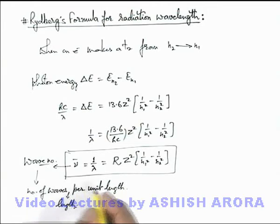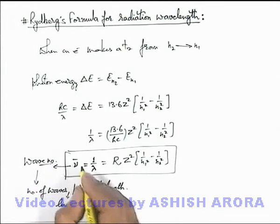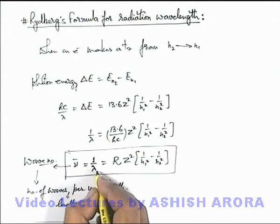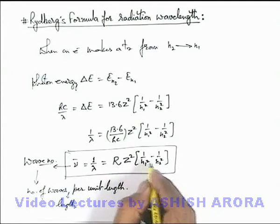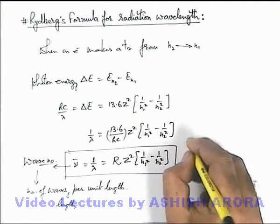This is 1 by lambda, and this is written as wave number. The value of wave number or reciprocal of wavelength can be written as R Z squared, 1 by n1 squared minus 1 by n2 squared.